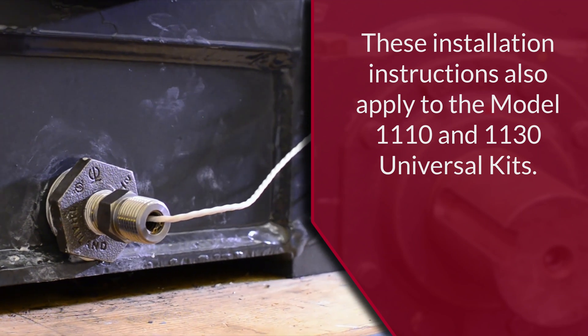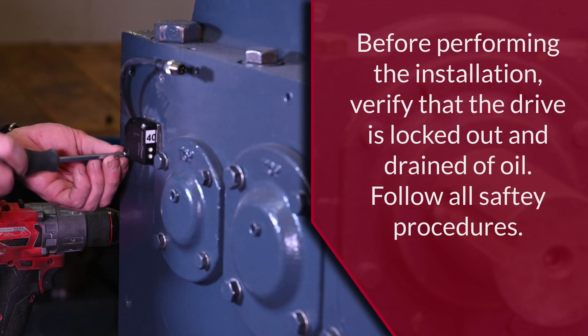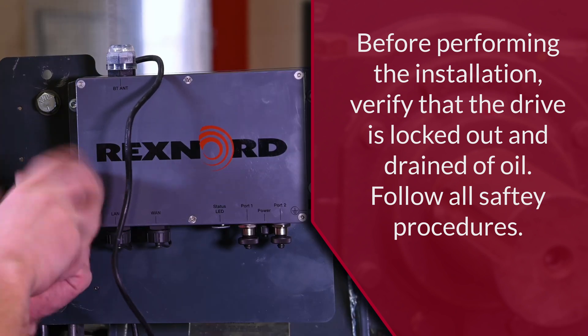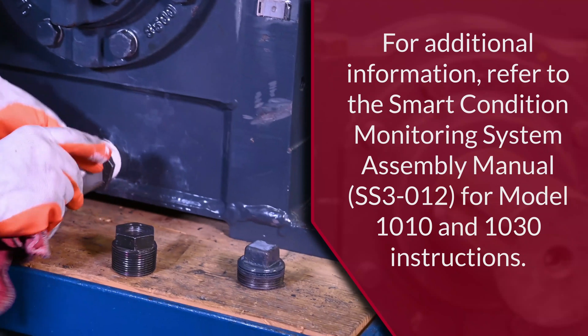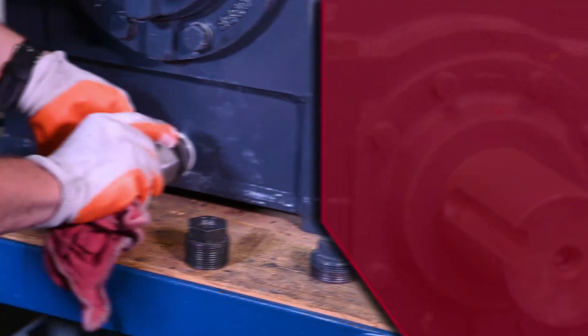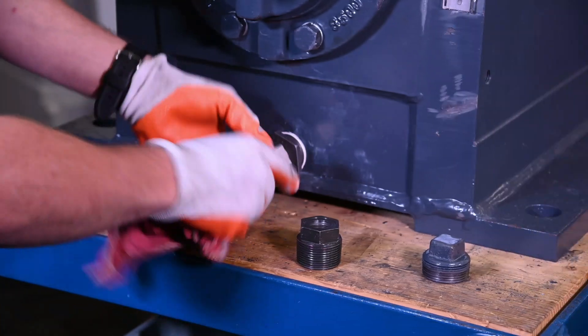As part of the Model 1010 Universal Field Installation Kit, we will cover installing an oil sump temperature and vibration sensor, an Andon light, and the edge device on the gear drive. For the Model 1030 Universal Field Installation Kit, the oil sump temperature sensor will be replaced with an oil quality sensor.